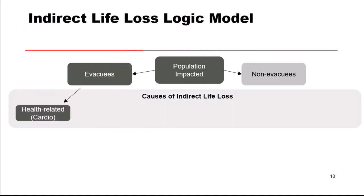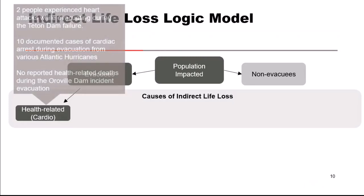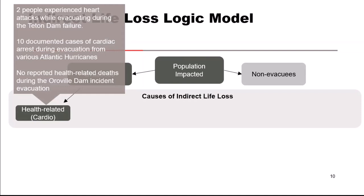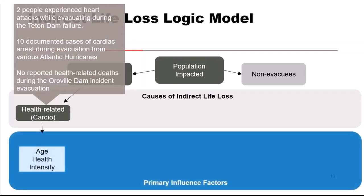We're breaking these out into causes and factors related to each indirect life loss cause. For heart-related events: 10 documented cases of cardiac arrest during various Atlantic hurricanes, nothing reported during the Oroville Dam incident and evacuation. Health-related primary influence factors are age — there's some correlation with heart disease and age — anyone's overall health, and intensity: a super stressful situation could induce cardiac arrest.